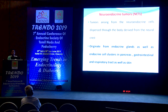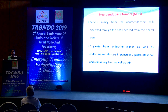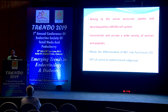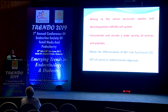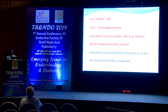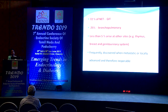Moving to neuroendocrine tumor imaging: neuroendocrine tumors arise from neuroendocrine cells dispersed throughout the body, derived from the neural crest. They can originate from endocrine glands as well as endocrine cell clusters in the GIT, respiratory tract, and pancreas. They all belong to the amine precursor uptake and decarboxylation (APUD) system, making them amenable for functional imaging. They are very slow, indolent, slowly progressing tumors.